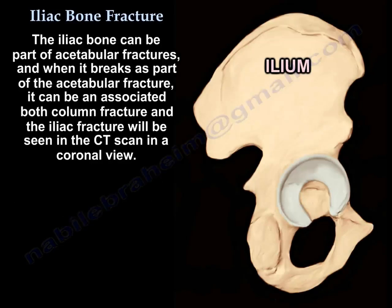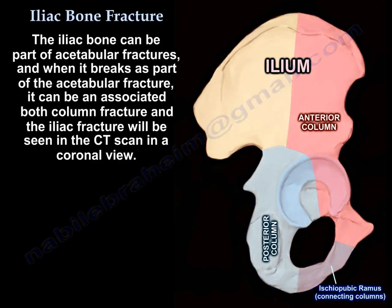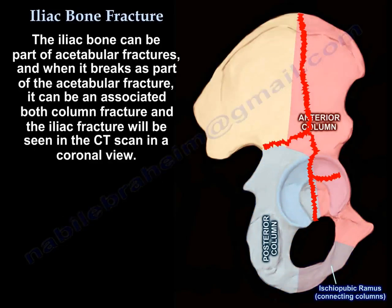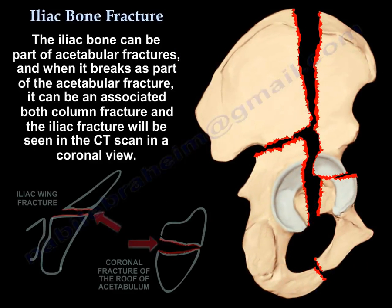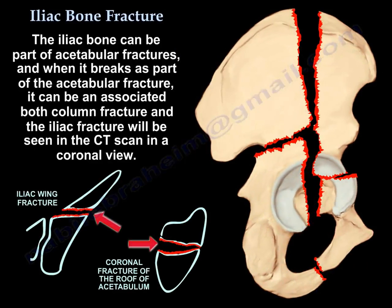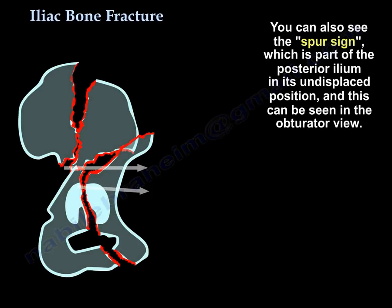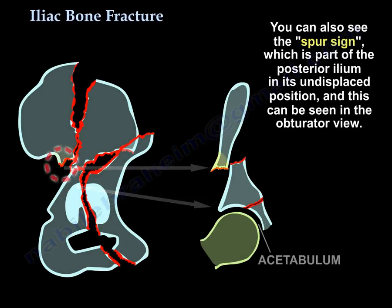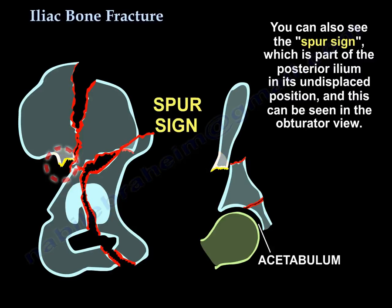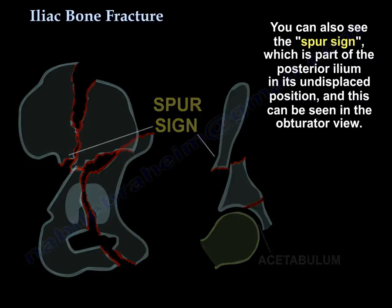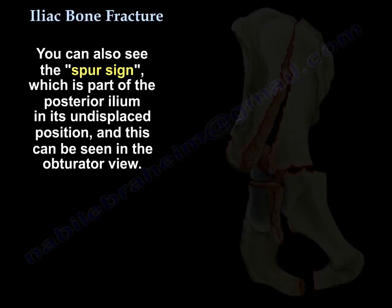The iliac bone can be part of the acetabular fractures, and when it breaks as part of the acetabular fracture, it can be an associated both-column fracture, and the iliac fracture will be coronal — you see it in a coronal way. You can also see the spur sign, which is part of the posterior ilium in its undisplaced position, and you can see that in the obturator view.